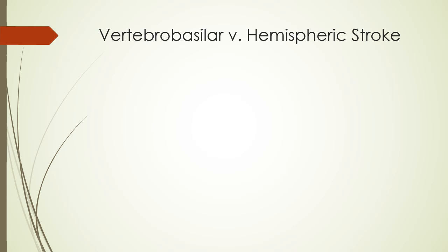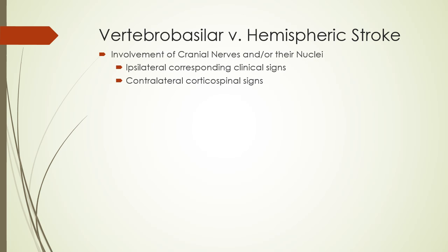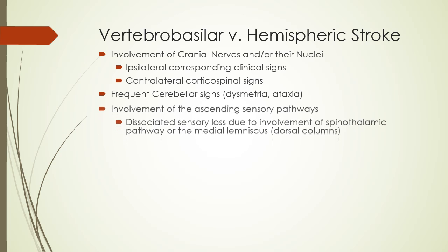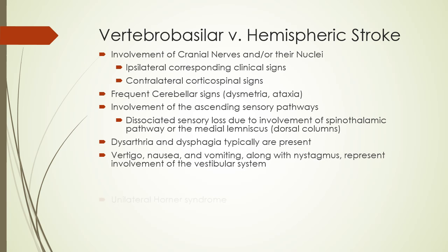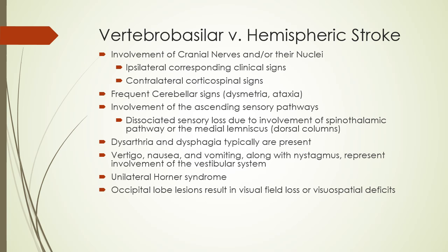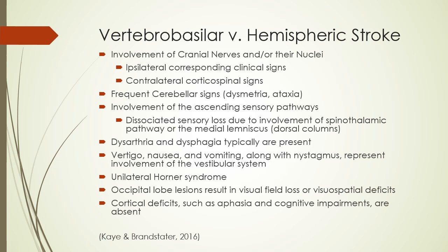Kay and Brandstater provide detail to differentiate most vertebrobasilar strokes from hemispheric strokes. There will likely be cranial nerve involvement, cerebellar signs, and sensory deficits on one side of the body. Dysarthria and dysphagia will typically be present along with vestibular symptoms. Horner syndrome may result from interruption of the sympathetic nerve to the eye, causing miosis and ptosis. If the lesion affects the occipital lobe, visual-spatial deficits may occur, while aphasia and cognitive impairments would be absent. The primary SLP focus would be dysphagia and dysarthria.